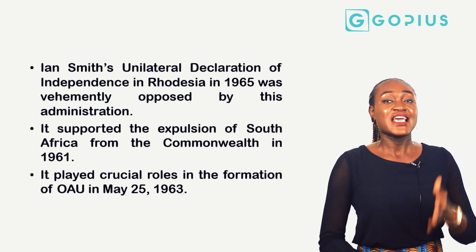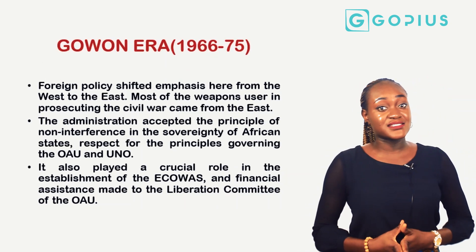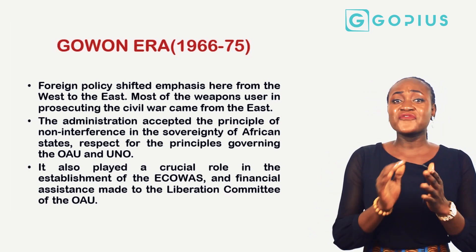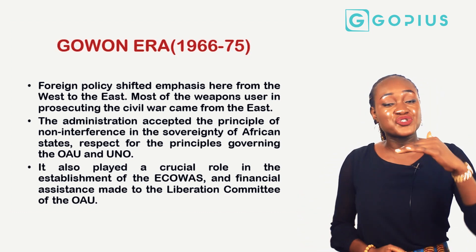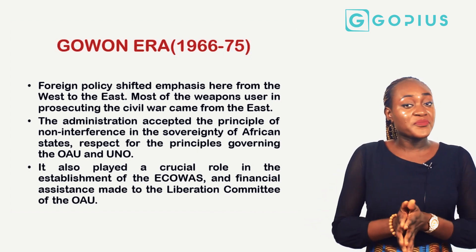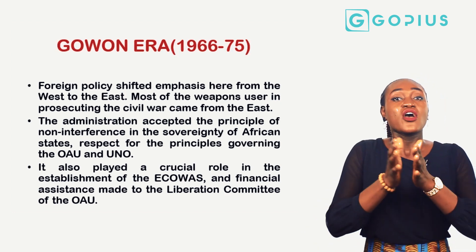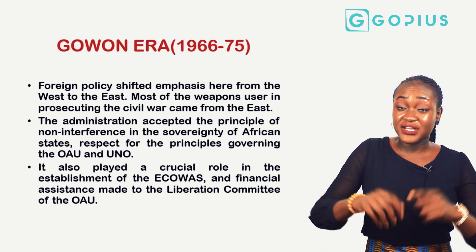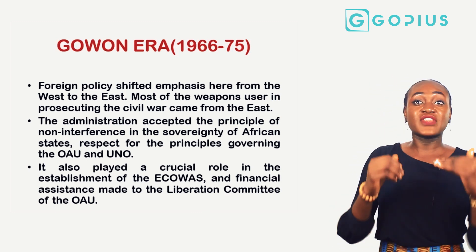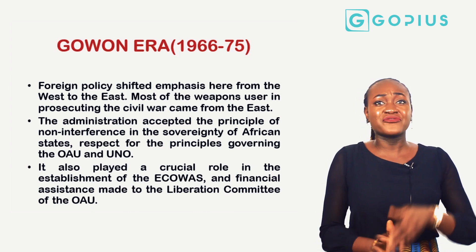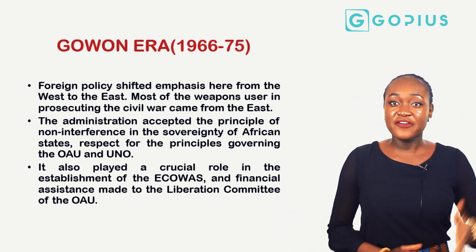The Gowon era ranged from 1966 to 1975. Foreign policies at that time shifted emphasis from the west to the east — most of the weapons used in prosecuting the civil war came from the east. The administration accepted the principle of non-interference in the sovereignty of African states, since most African states at the time were colonized, and pushed for respect for the principles governing the OAU and the UNO.